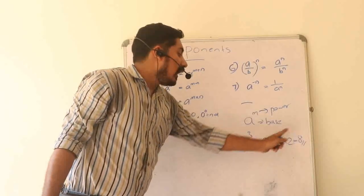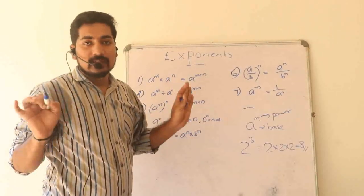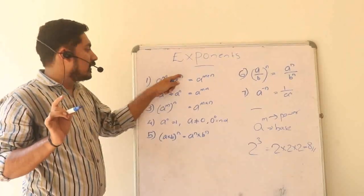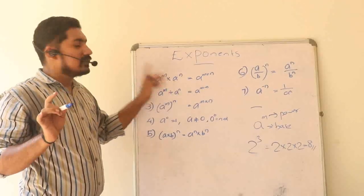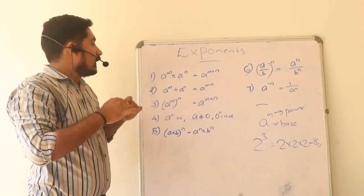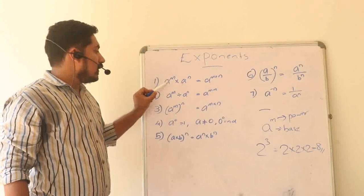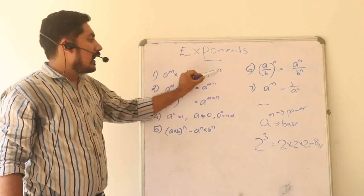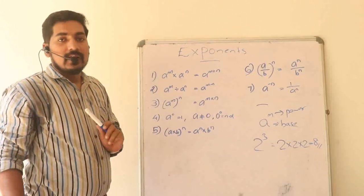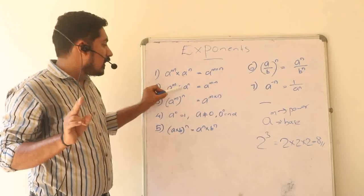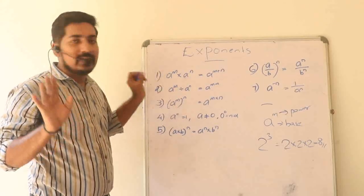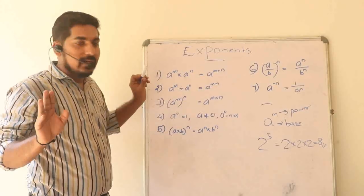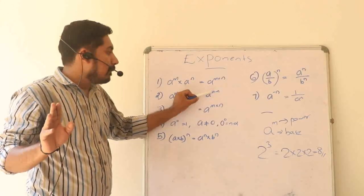Let us move on to the Krithiya rules. Rule 1: a raised to m, into a raised to n — when the two bases are the same, we add the powers: a raised to m plus n. Rule 2: a raised to m divided by a raised to n, with the same base, gives a raised to m minus n.